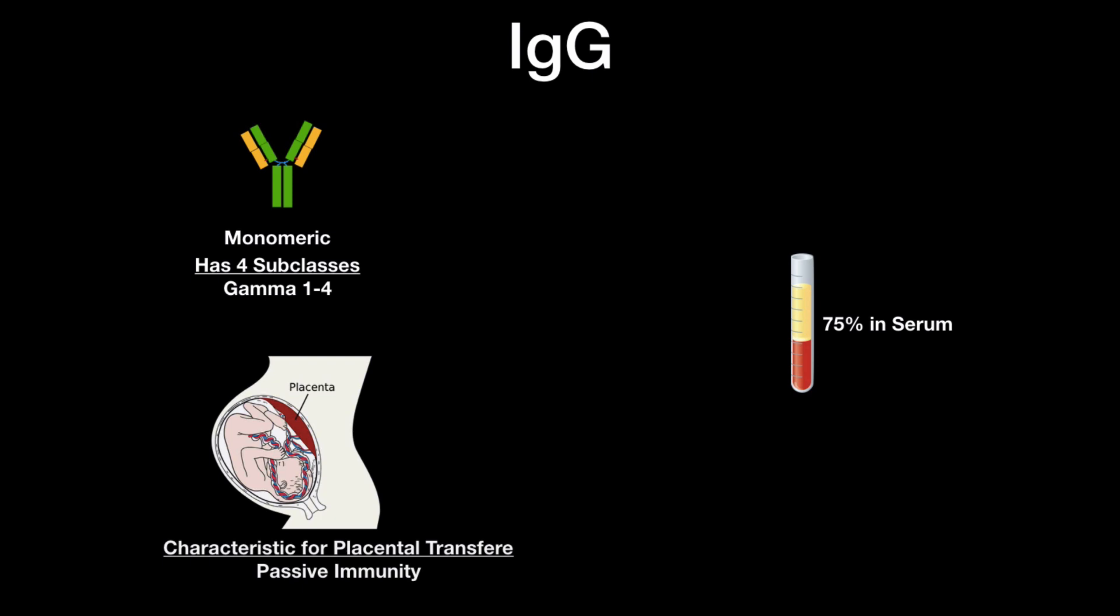IgG is the only antibody that gives us passive immunity from our mother by placenta transfer before we're born. Because of that, the x-axis is going to be the age in months, and the y-axis, here shown in percent, is going to be the concentration of immunoglobulins we have in our plasma. Now, when we're first born, all the immunoglobulins we have in our blood is going to be IgG, and those are from our mothers.